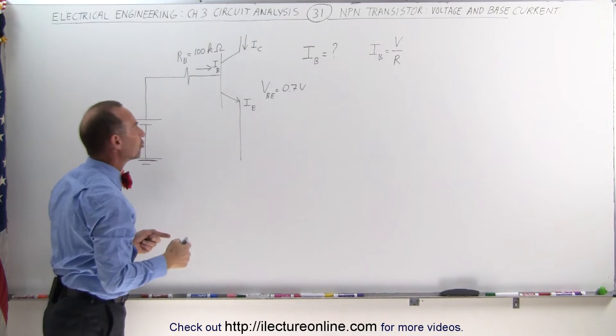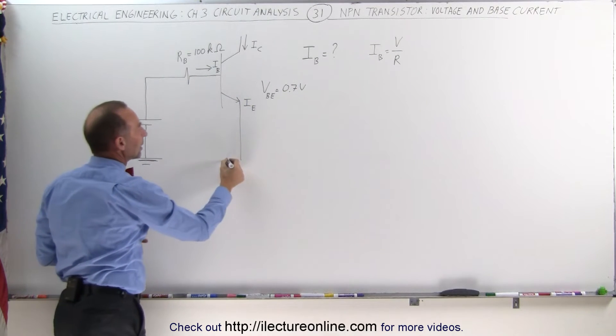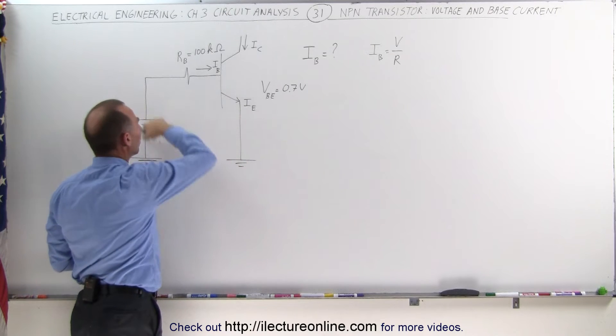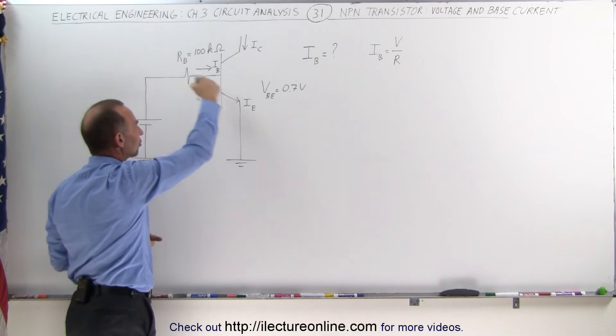So there's a 0.7 volt voltage drop from there to there, and assuming that this is connected to ground as well, we have a current flow in this direction.